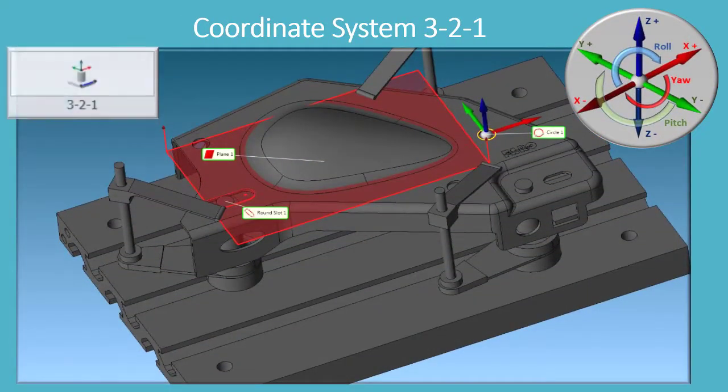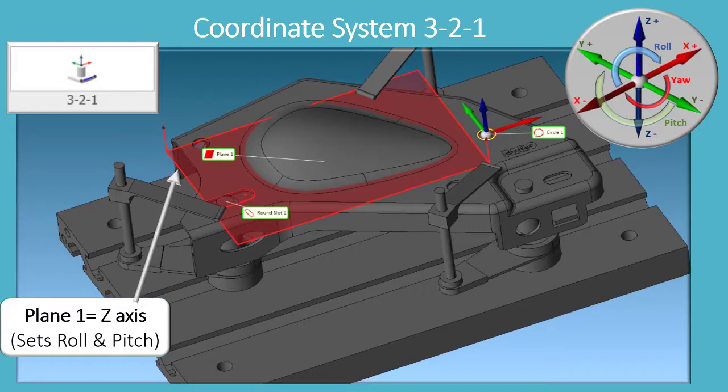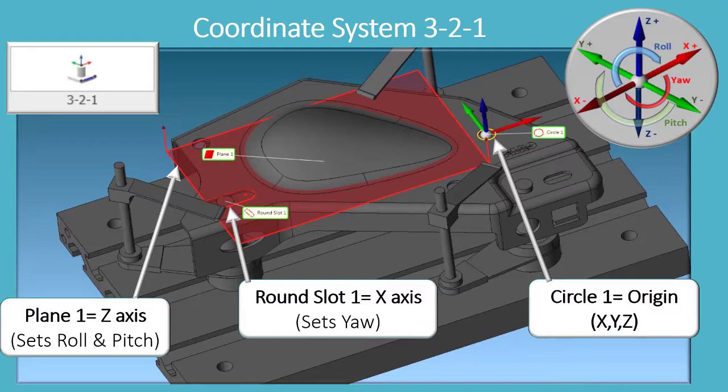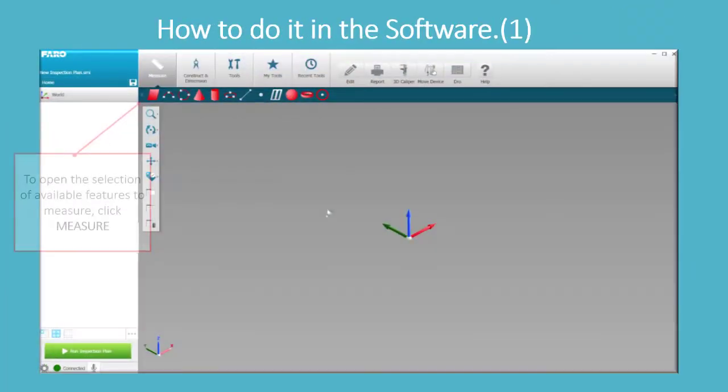Plane 1 equals the Z-axis and sets roll and pitch. Round slot 1 equals the X-axis and sets yaw. Circle 1 equals the origin XYZ.